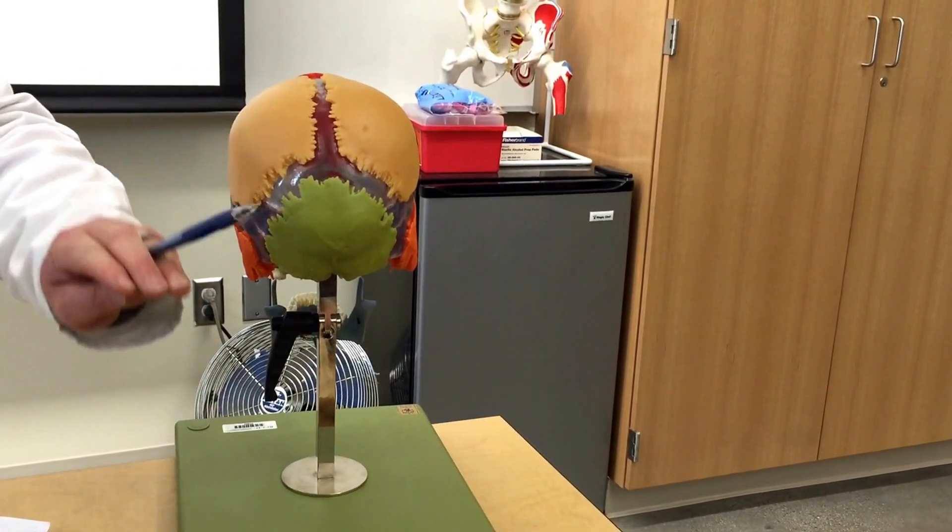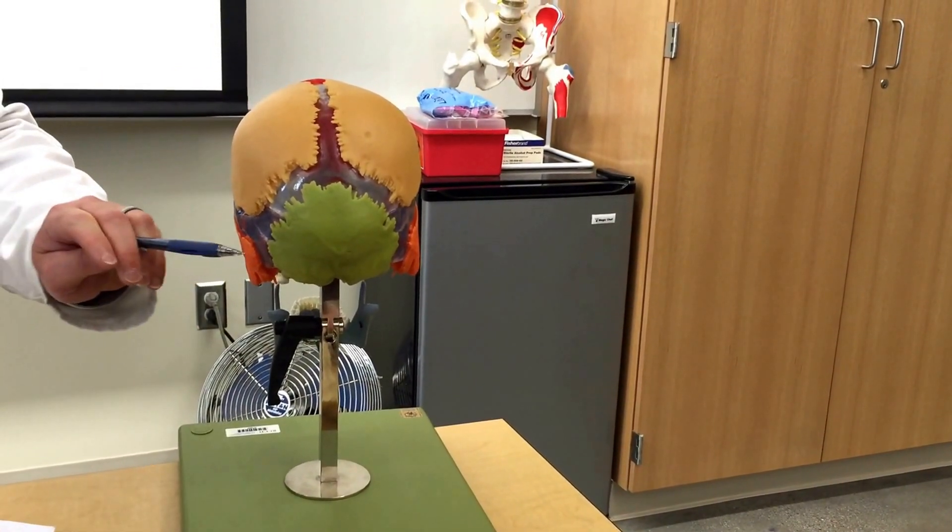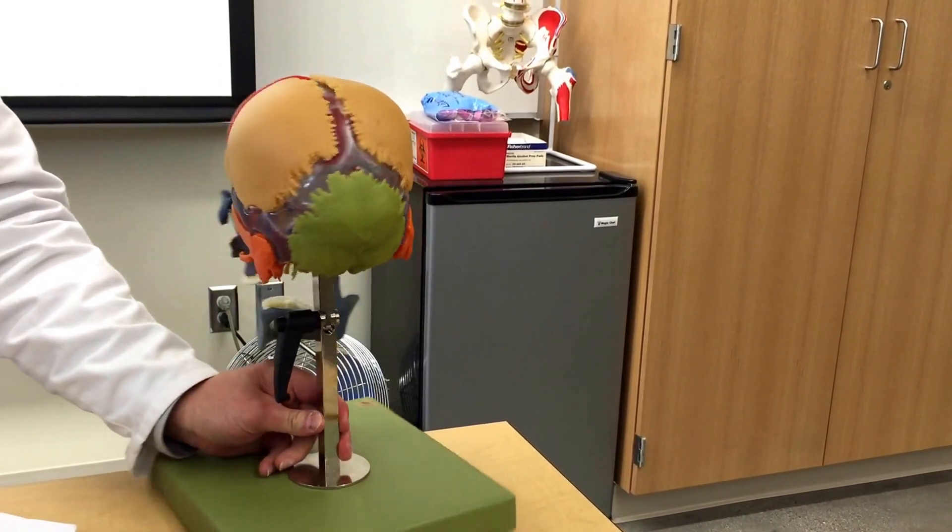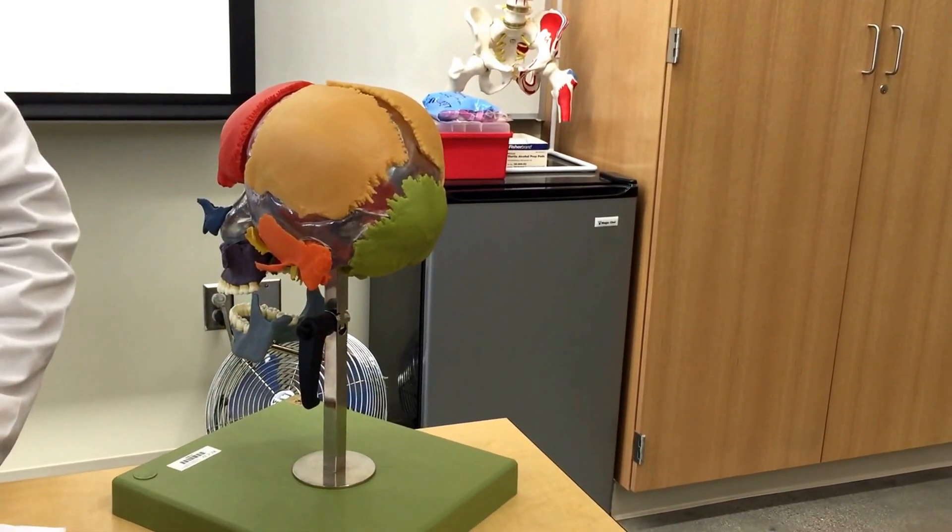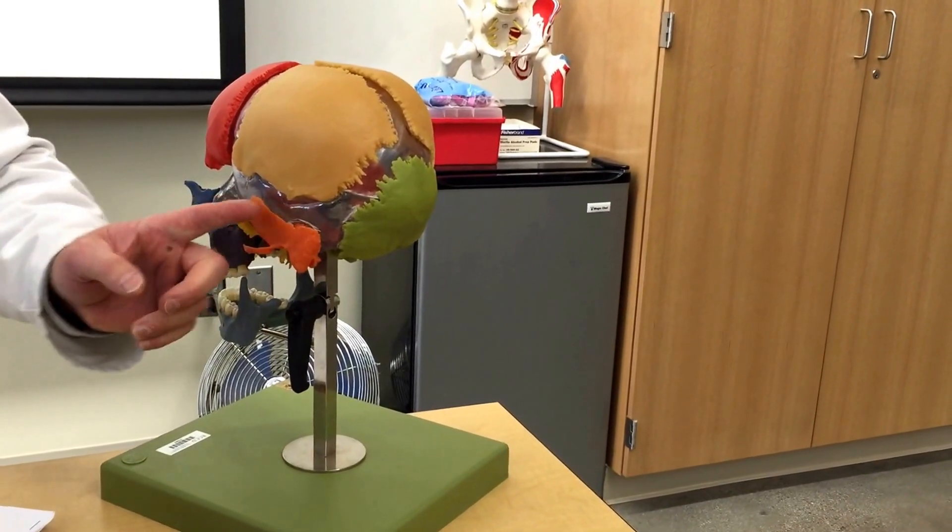Alright, and those two bones, the parietal and occipitals, are joined to the side bone or the bone that is the temporal in orange by the squamous suture.